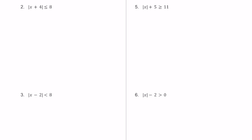For number 2, we have the absolute value of x plus 4, and that's less than or equal to 8. For our first statement, we write x plus 4 is less than or equal to 8 — same as without the absolute value bars. Our second statement is x plus 4 is greater than or equal to negative 8, flipping the inequality and using the opposite of 8.